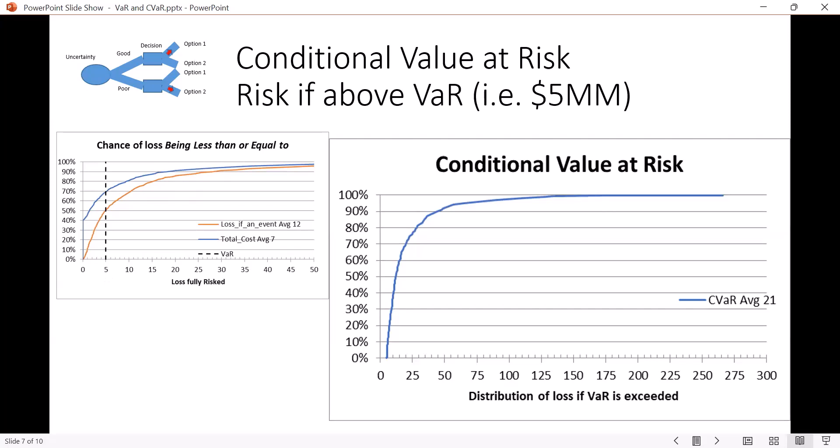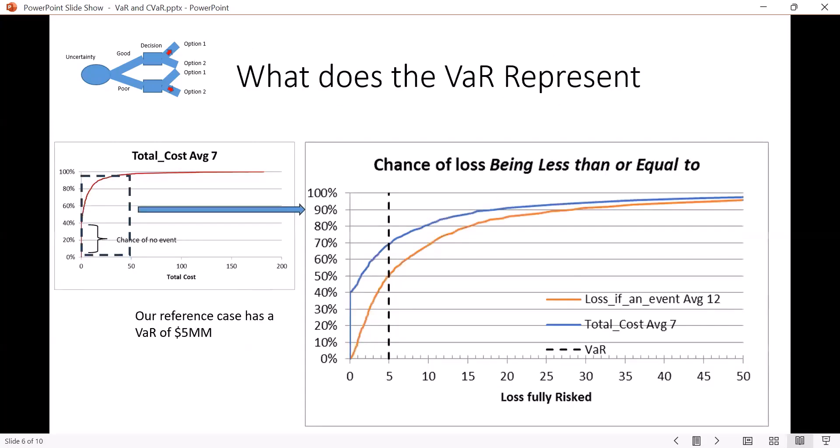One more point I want to make. There's two ways to think about the VaR. One way is to pick a number. In other words, I don't want to lose more than $5 million. Or I could say, I don't want to lose more than 30% of the time. I don't want to exceed my VaR more than 30% of the time, and that would be the five. Or I could say 80% of the time, and then I'd be looking at a VaR closer to 10.